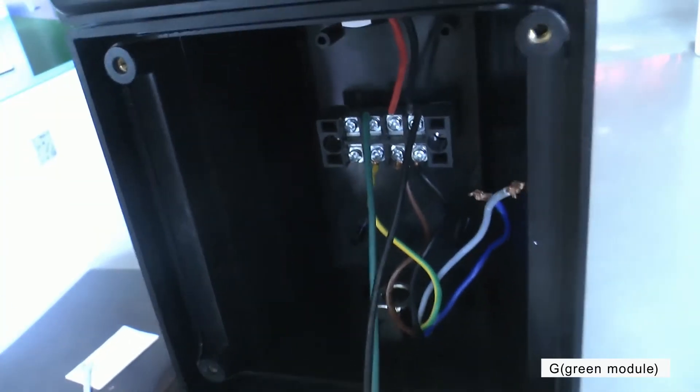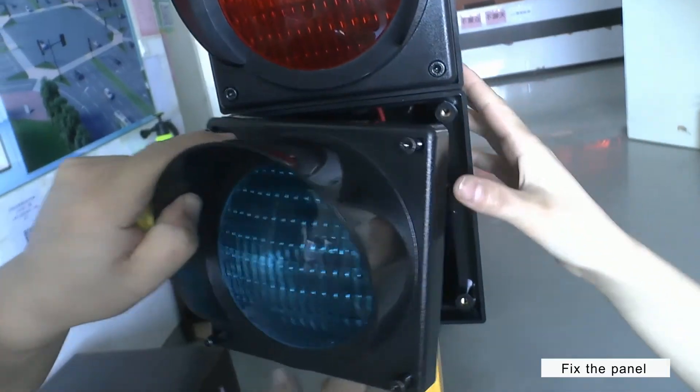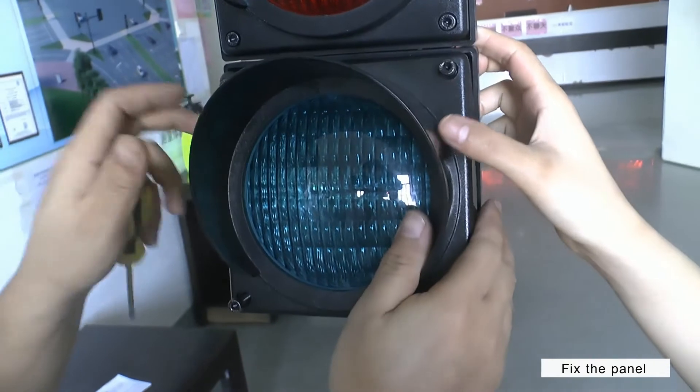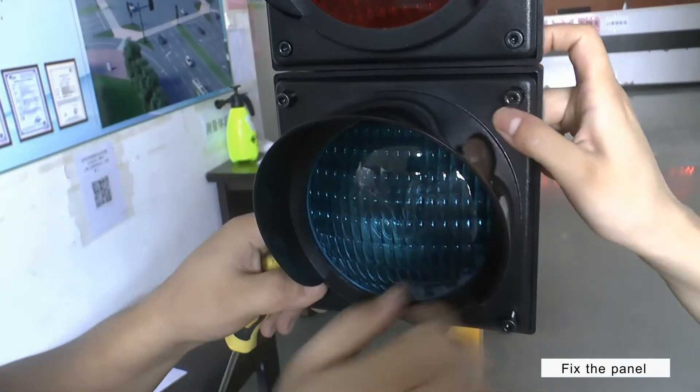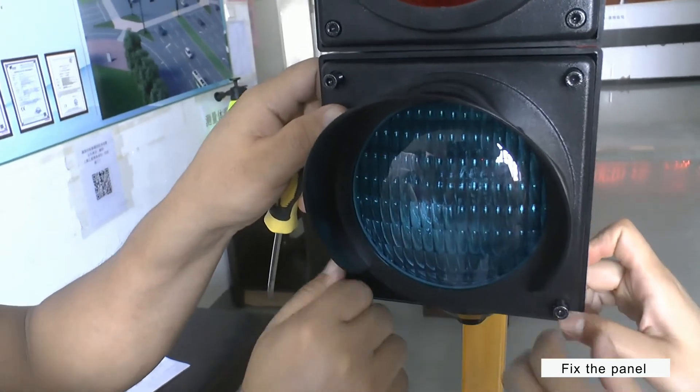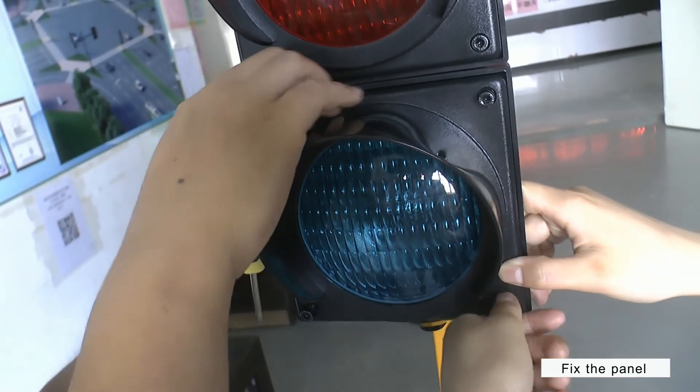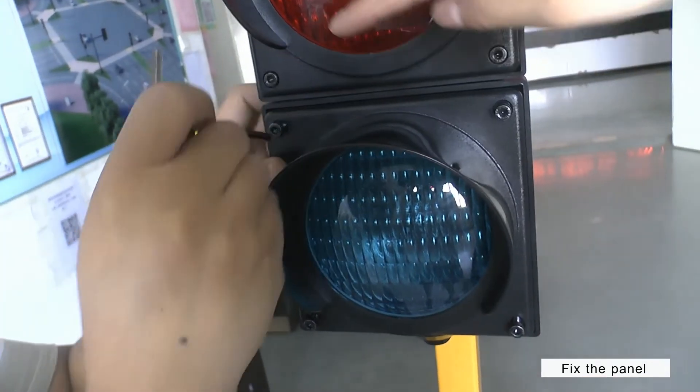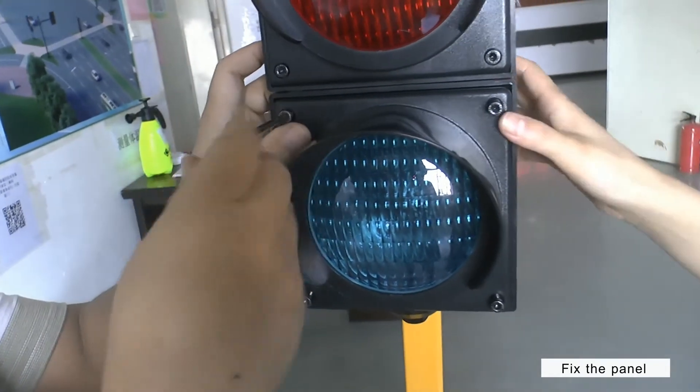After connecting wires, place the top of the housing and fasten these four pieces. Use the allen wrench to fasten it.